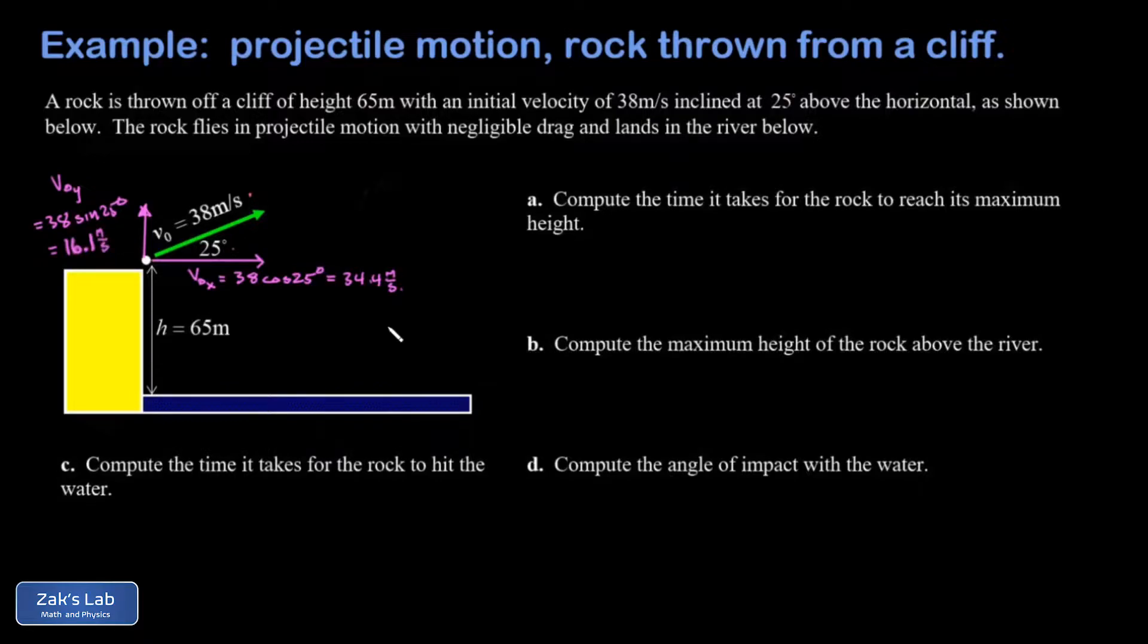Now that those components are resolved, let's take a moment to be clear about where we're putting the origin in our problem. Because part B wants us to compute the maximum height of the rock above the river, we're going to put our origin directly below the initial position of this rock and call the height of the river zero.